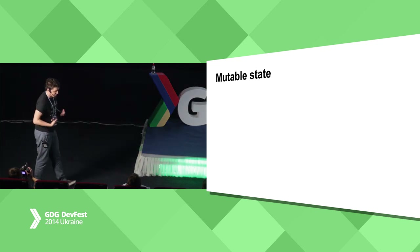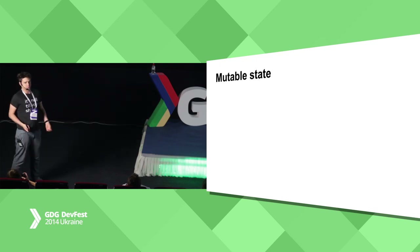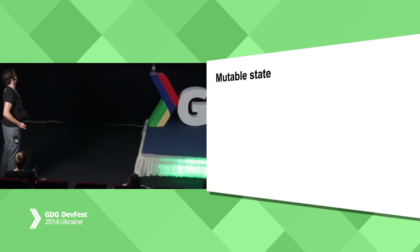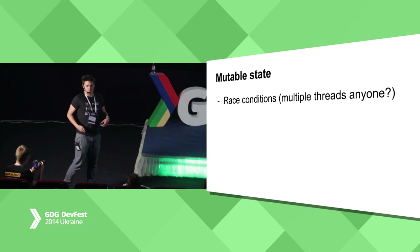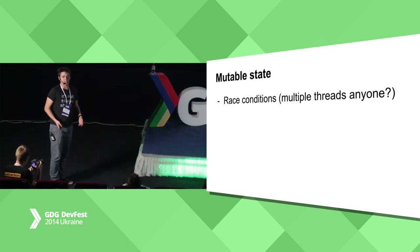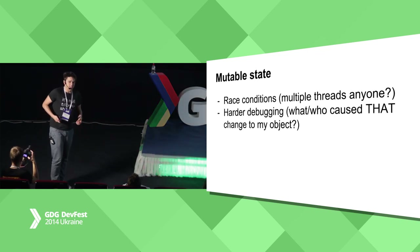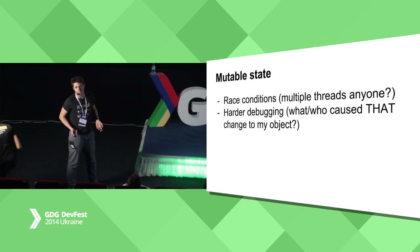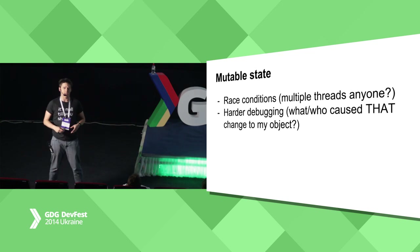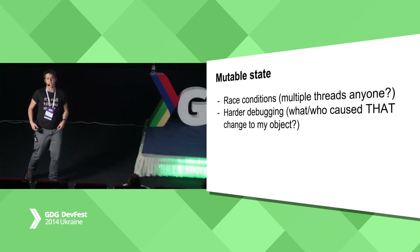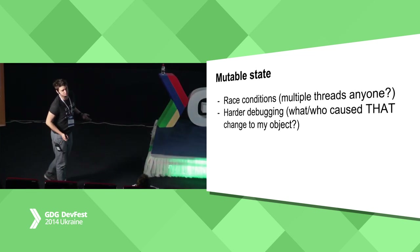Mutable state has a lot of disadvantages. Of course, sometimes you cannot avoid it, but you should try to avoid it as often as possible because race conditions are more likely to appear in applications that have a lot of mutable state. It's also harder to debug, because you start a debugger, put eight breakpoints in Android Studio, and look line after line at how the state of your object is changing. It just makes trouble.